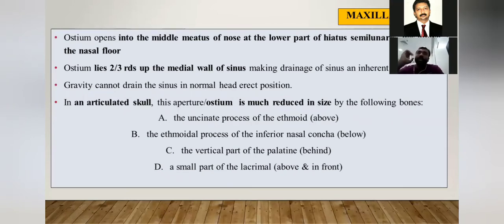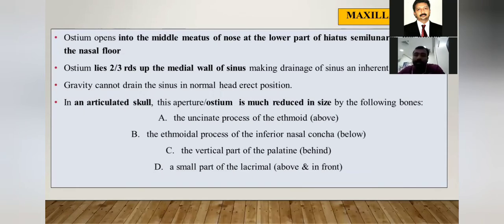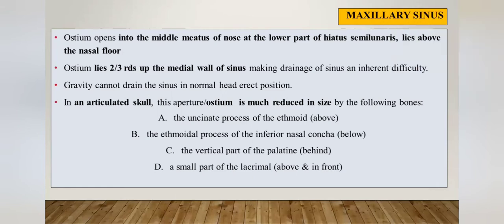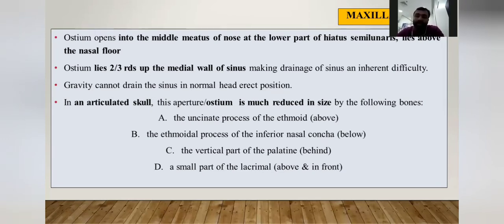The antrum of Highmore has an opening called the ostium, which opens into the middle meatus of the nose at the lower part of the hiatus semilunaris, above the nasal floor. In an articulated skull, the size of the ostium is compromised by the uncinate process of ethmoid above, the ethmoidal process of inferior nasal concha below, the vertical part of the palatine process behind, and the lacrimal bone in front. The sinus opening is located on the medial wall, above two-thirds of the sinus cavity floor, meaning it cannot drain properly.